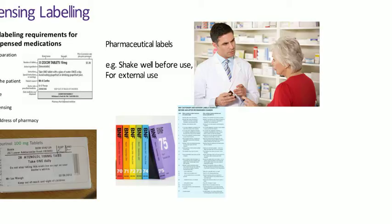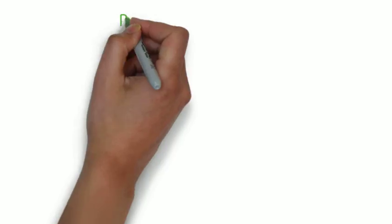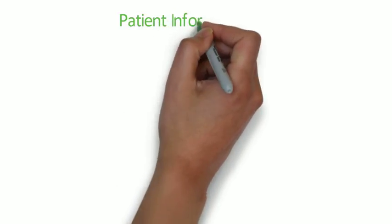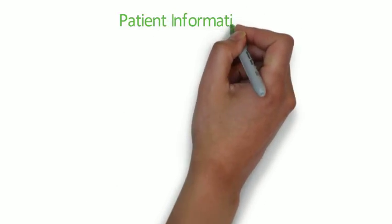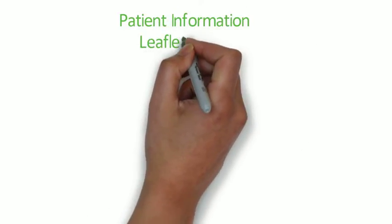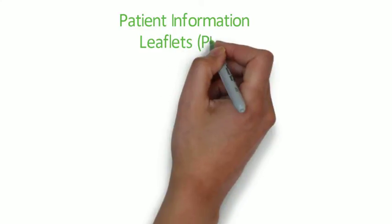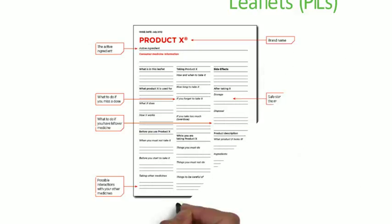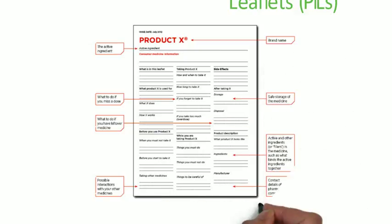Patient information leaflets, known as PILs, have been a legal requirement since 1st July 1999. They must be supplied each time a medicinal product is sold or supplied, including when dispensed. The full legal requirements for the information to be included in PILs are contained within the Human Medicines Regulations 2012.